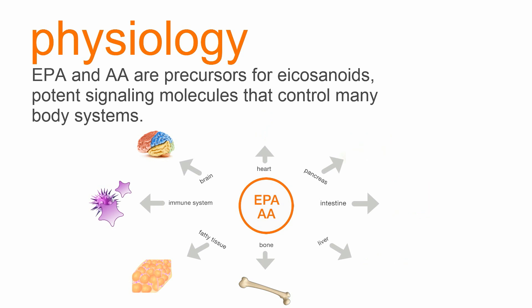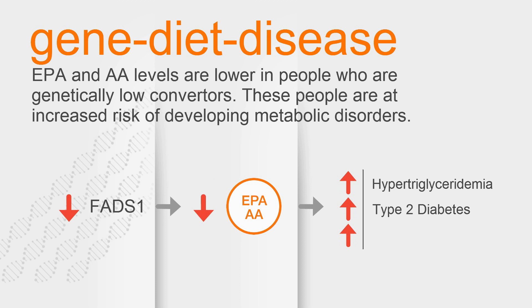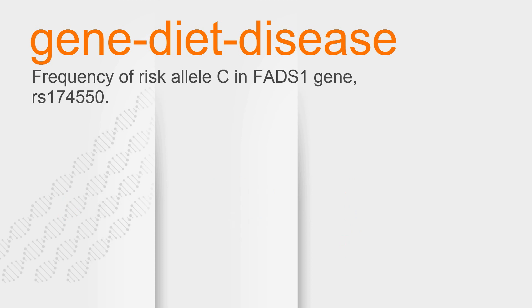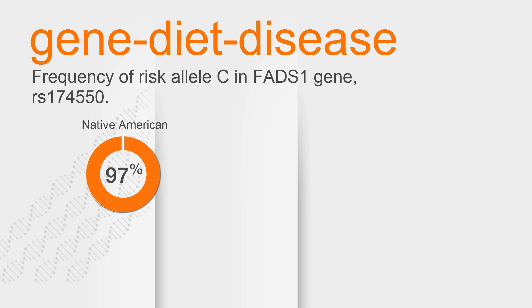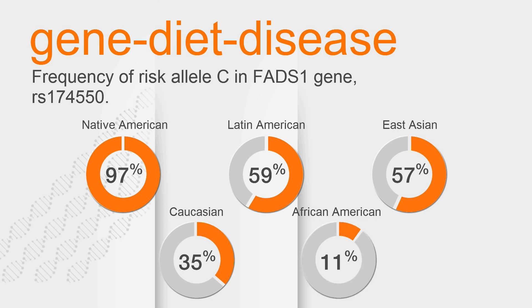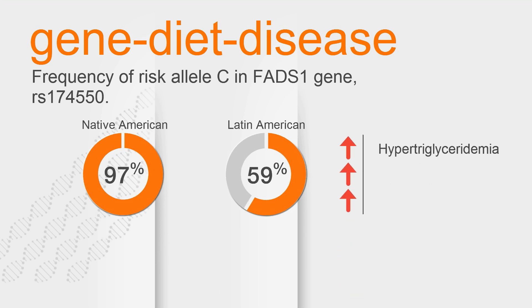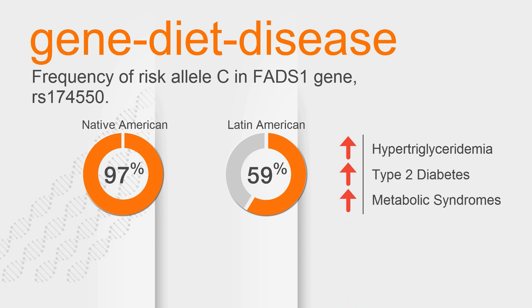Deficiency, excess, or imbalance of these fatty acids will lead to health problems. Numerous studies have confirmed that EPA and AA levels are lower in people who are genetically low converters. These people are at increased risk of hypertriglyceridemia, type 2 diabetes, and metabolic syndromes. The frequency of the low converter allele is about 97% in Native Americans, 59% in Latinos, 57% in East Asians, 35% in Caucasians, and 11% in African Americans. Indeed, in Native American and Latino populations, we see more hypertriglyceridemia, type 2 diabetes, and metabolic syndromes.